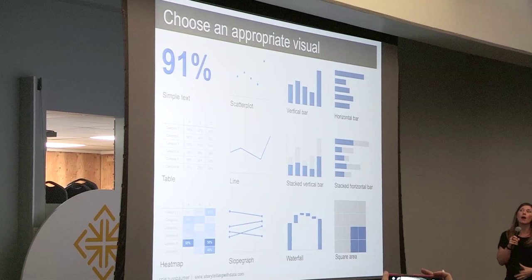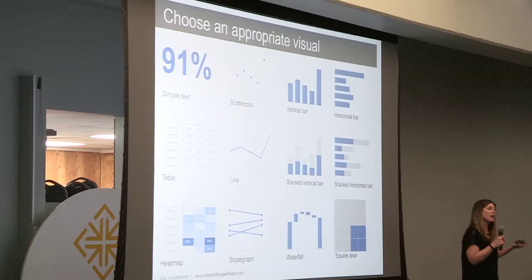First off, when you have some data you want to show, typically a table or a graph will be the first sorts of visuals we think about. But before we get there, I want to spend a moment on the power of simple text. When you have just a number or a couple of numbers to show, showing the numbers themselves can be a really powerful way to do so. Putting a number or two into a table or a graph can cause the numbers themselves to lose some of their impact.